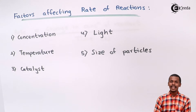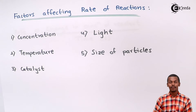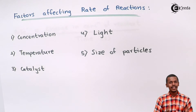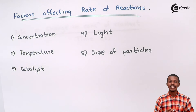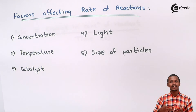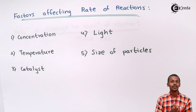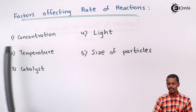When reactants react with each other to form a product, if the reactant is present in less quantity, it will obviously form less product. It has been found that if the concentration of the reactant is more, then the rate of reaction also goes on increasing, and the formation of product increases with time. So concentration is directly proportional to the rate of reaction.